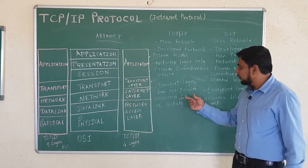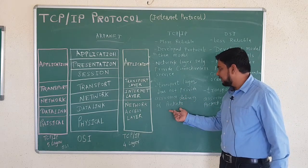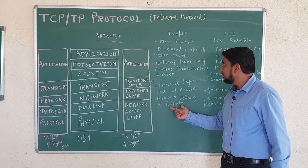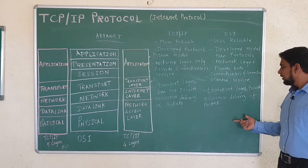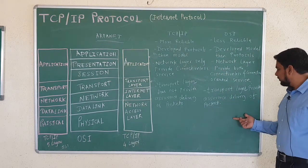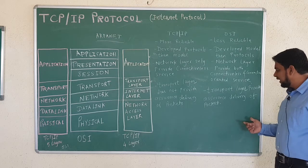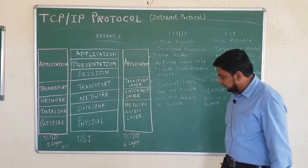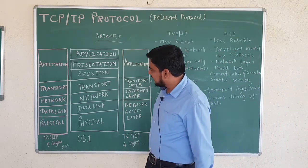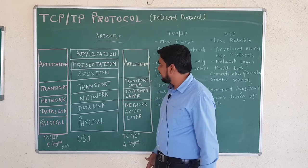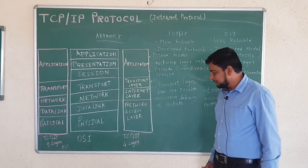Another difference: the transport layer in TCP/IP does not provide assurance of delivery of packets. Whereas in OSI, the transport layer provides assurance of delivery of packets. These are some of the key differences between TCP/IP and OSI model.